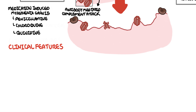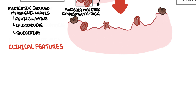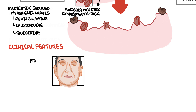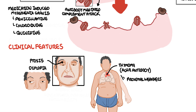Clinically, myasthenia gravis can be divided into three types: ocular myasthenia gravis, which only involves the eyes; generalized myasthenia gravis, which predominantly affects the limbs causing weak arms and legs; or an overlap between the two. Features of ocular myasthenia gravis include ptosis and diplopia from the ocular muscles being affected. Myasthenia gravis may also be associated with thymomas, particularly with AChR-positive antibodies. Patients often present with fatigable proximal muscle weakness, and respiratory muscle weakness can also occur.